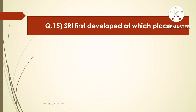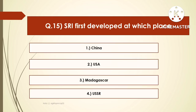The next question is: SRI was first developed at which place? Options are China, USA, Madagascar, or USSR. The right answer is Madagascar. The SRI system of rice intensification was developed at Madagascar.